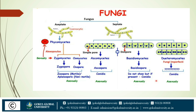Fungi are also classified based on asexual reproduction. Aseptate have two spore types: zoospore, which is motile, and aplanospore, which is non-motile. Asexual reproduction is done by zoospore or aplanospore in zygomycetes or oomycetes, whereas asexual reproduction of ascomycetes is by conidia. Basidiomycetes do not show asexual reproduction typically, but if present it occurs through conidia; deuteromycetes asexual reproduction is also done through conidiospore.